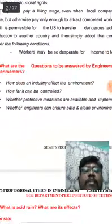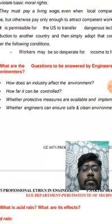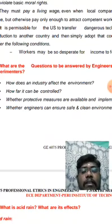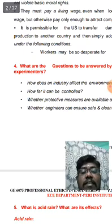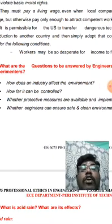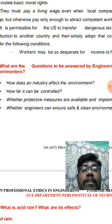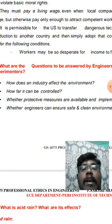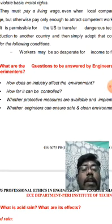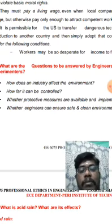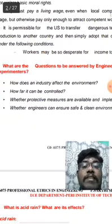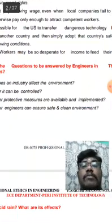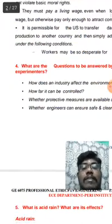If the engineer acts as an experimenter, what does the engineer need to consider? How does the industry affect the environment? How far can it be controlled? Whether protective measures are available and implemented? The engineer wants to ensure a safe and clean environment. That is the responsibility of the engineer as an experimenter.